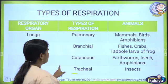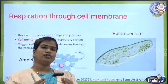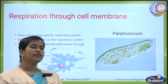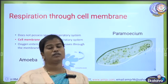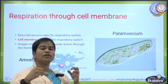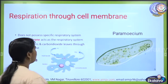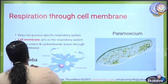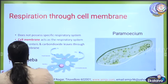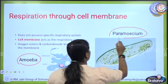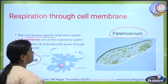Now we will switch on to respiration through the cell membrane. You know what unicellular and multicellular organisms are. Most unicellular organisms undergo respiration through the cell membrane, because they don't have any specific respiratory organs. Examples of respiration through cell membrane are amoeba and paramecium. As mentioned, they do not possess any specific respiratory system.